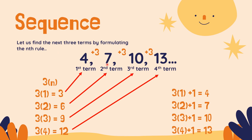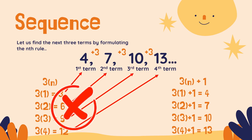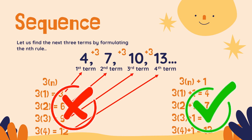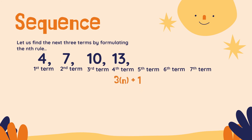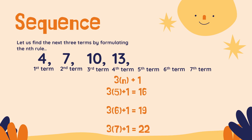It's the same now, right? 4, 7, 10, 13. So the rule here is 3N plus 1 instead of 3N alone. 3N is not the correct rule; 3N plus 1 is the correct rule. Now, let us find the next 3 terms using this Nth rule: 3N plus 1. We replace N by 5, 6, and 7: 3 times 5 is 15 plus 1 equals 16; 3 times 6 plus 1 equals 19; 3 times 7 plus 1 equals 22. So the next 3 terms are 16, 19, and 22.